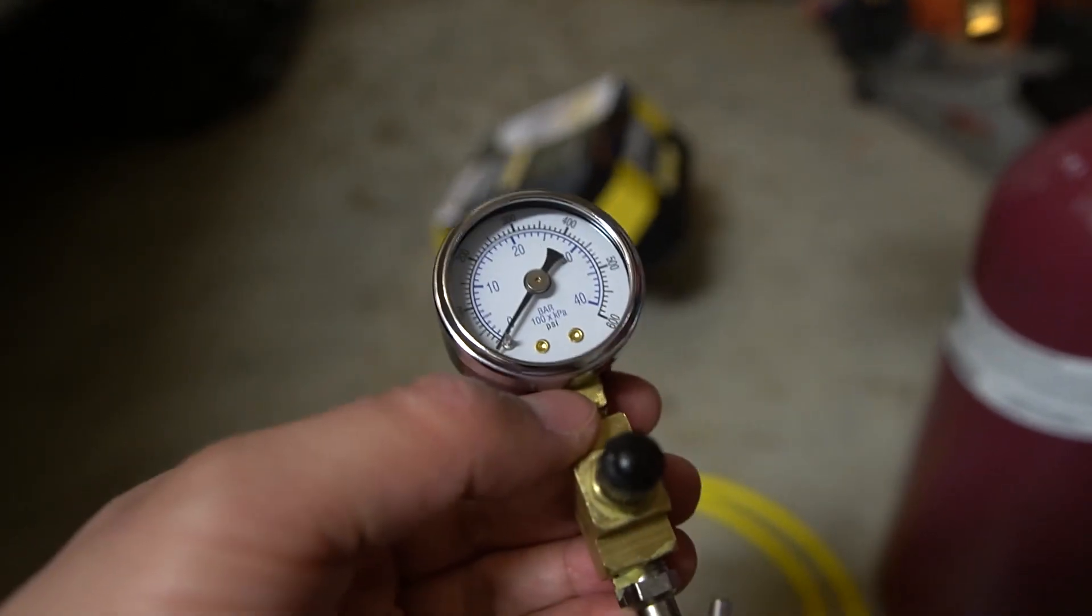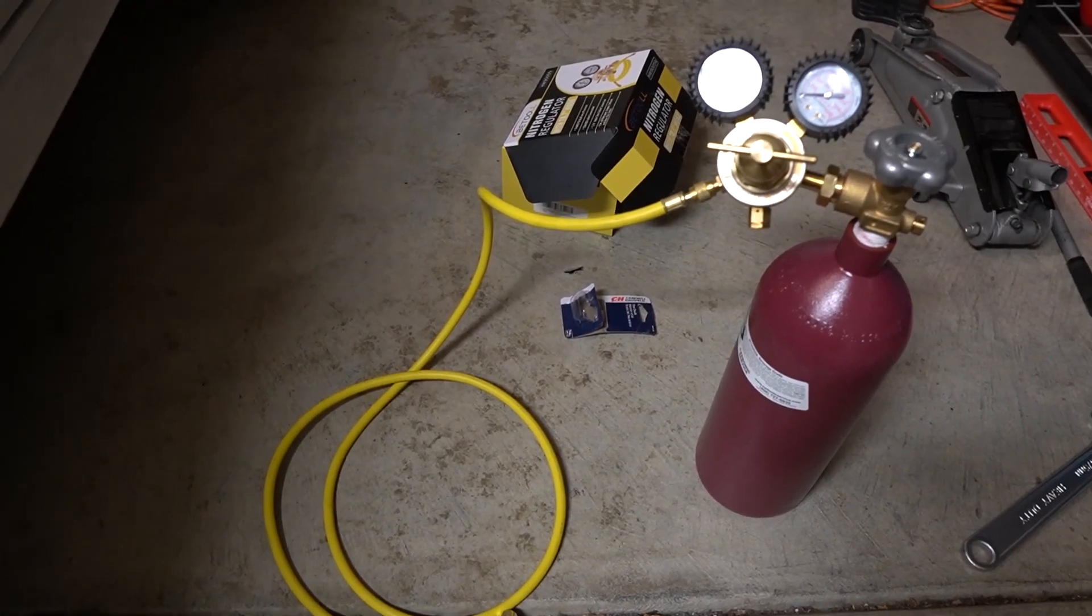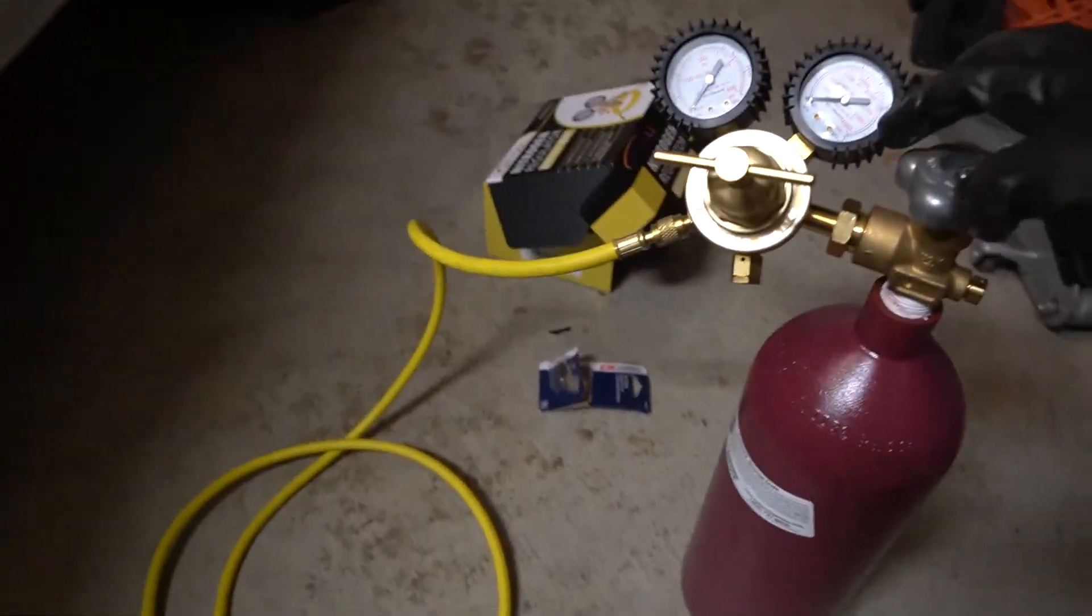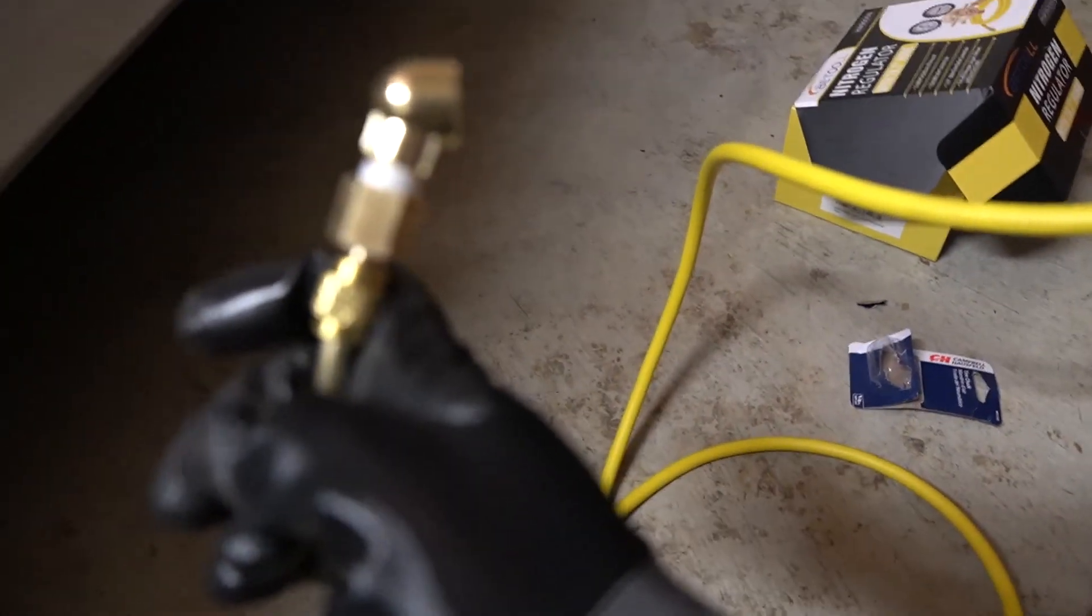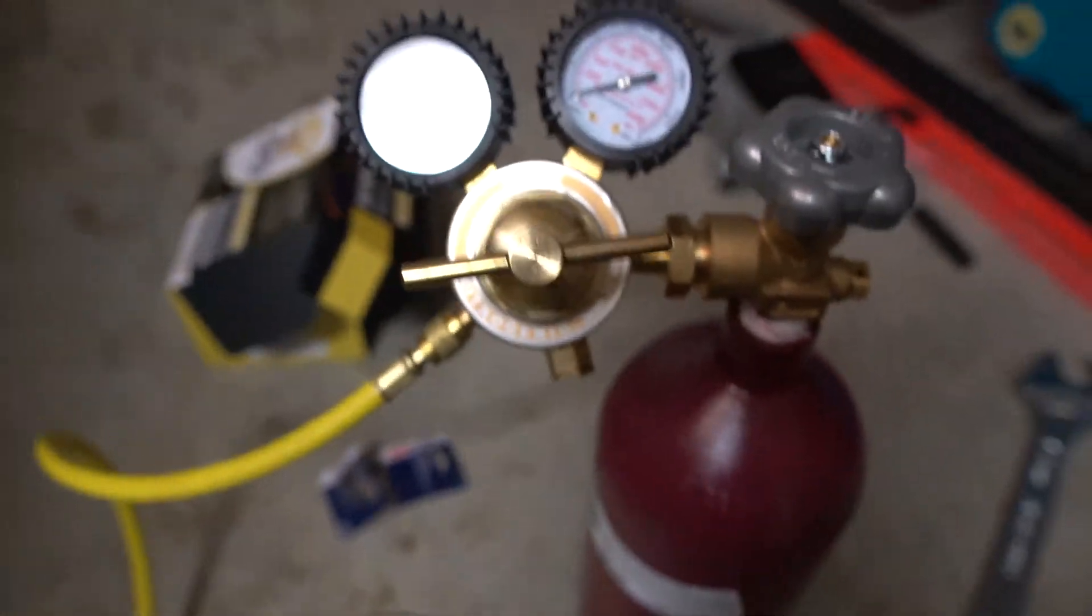Alright, so now that I got everything hooked up, the regulator is attached to the tank right here, hose is attached tightly here with the air chuck on the other end right here. How the regulator works is you want to make sure this thing is completely closed.